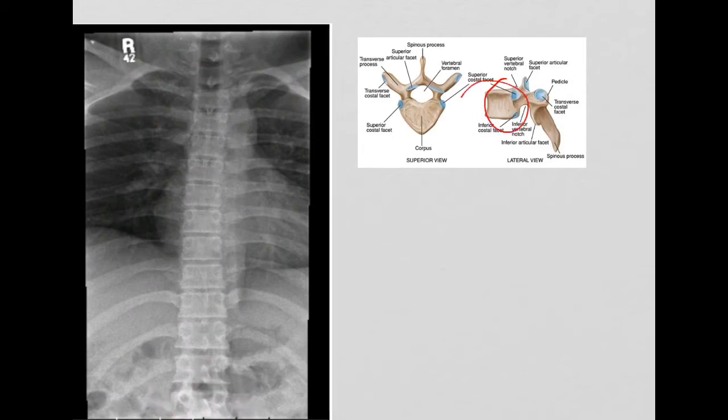So those were our vertebral bodies. Now let's talk about some of the other characteristics that our spine, our thoracic spine had. Thoracic spine had this nice long spinous process. And you can see that guy right here.